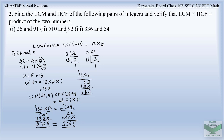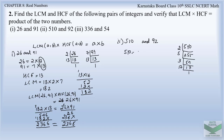Now moving on to the second set of numbers: 510 and 92. Let us first factorize and then prove. Factorizing 510: it is divisible by 2 giving 255, then by 5 giving 51, and 51 = 3 × 17. Since 17 is a prime number, we stop. So the prime factors of 510 in product form are 2 × 5 × 3 × 17.